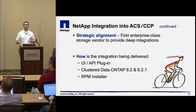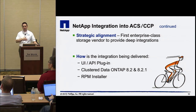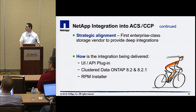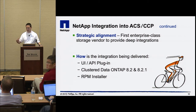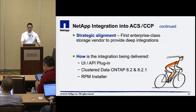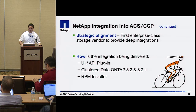In terms of versions we support for Cluster Data ONTAP, we start with 8.2 as the first release, and we support 8.2.1 which just GA'd a few weeks ago. To get the plug-in, go to the NetApp support site, download an RPM, install it on your management server, tweak one file, reboot the server, and the plug-in is ready to go. It's a no-charge product.